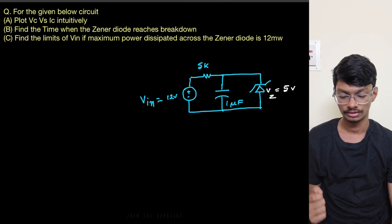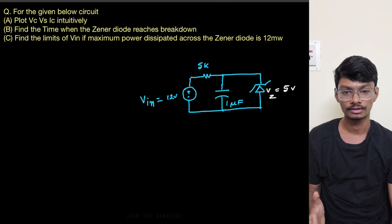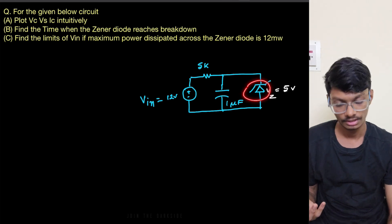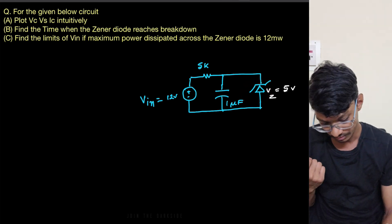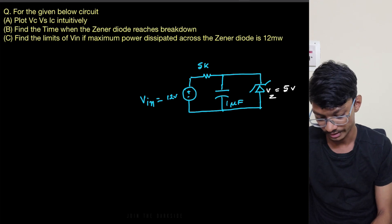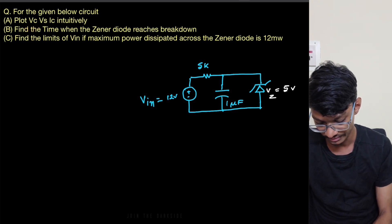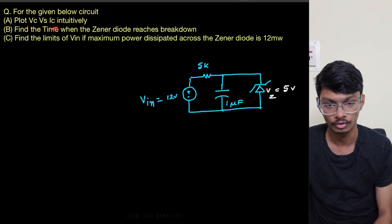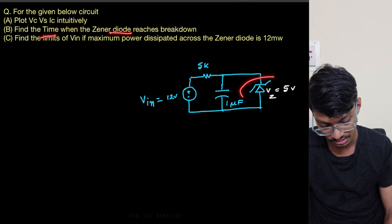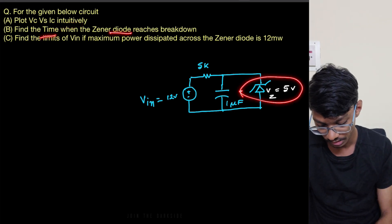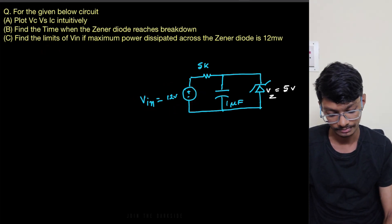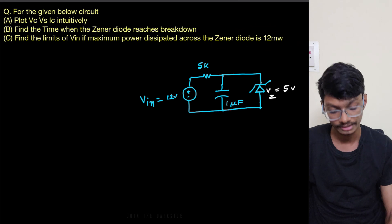Hi everyone, I'm Anish. Let's solve the question on Zener diode. We have been given a circuit with a Zener diode. The question asks us to find the VC versus IC plot intuitively, then find the time when the Zener diode reaches breakdown, and also find the limits of the input voltage if the maximum power dissipated in the Zener diode is 12 milliwatts.